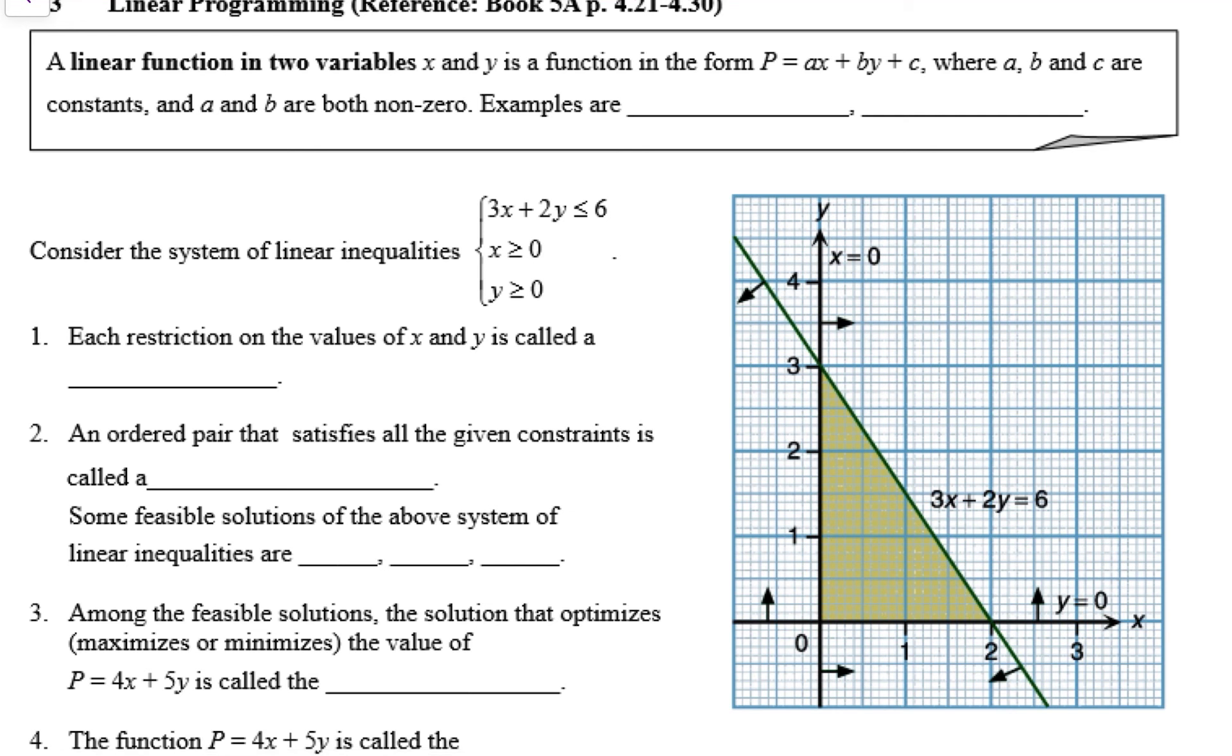In linear programming, each restriction, that means each linear inequality, so each restriction on the values of x and y is called a constraint.